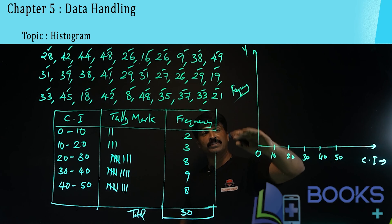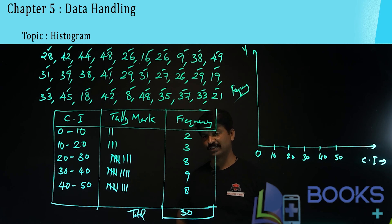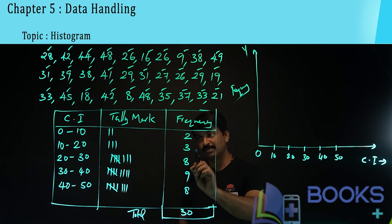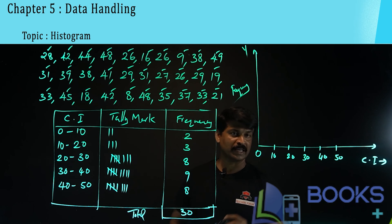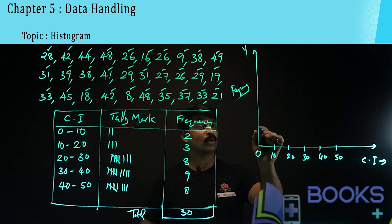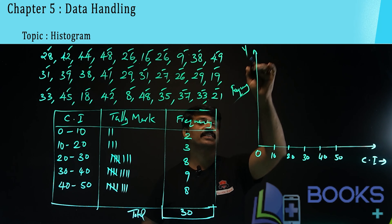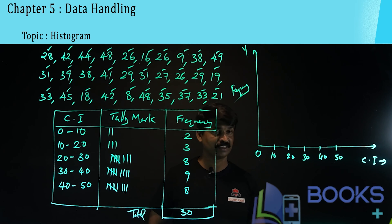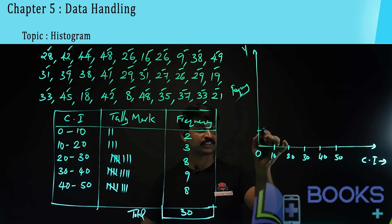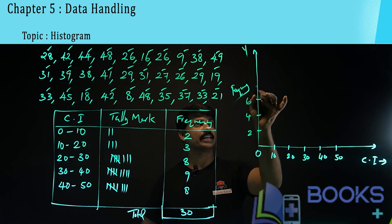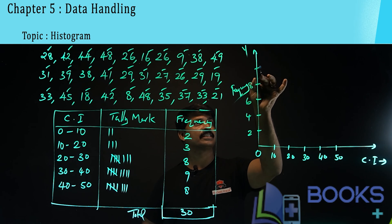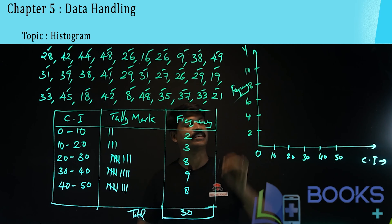Frequency should be represented on the y-axis. The maximum frequency is 9, so we can mark the y-axis as 2, 4, 6, 8, 10.